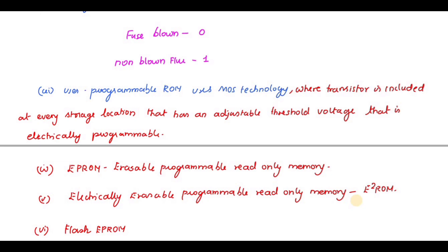In EPROM, the content is erased by using ultraviolet rays; if ultraviolet rays are applied, all the content gets erased. Next is Electrically Erasable Programmable Read-Only Memory (EEPROM). Compared to EPROM which erases the entire data, in EEPROM a specific data location can be chosen and erased individually.